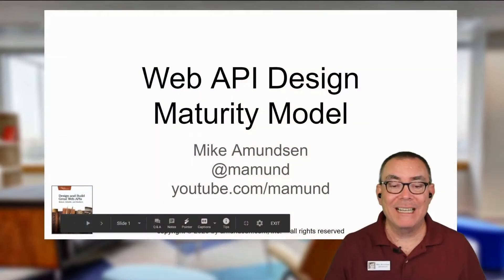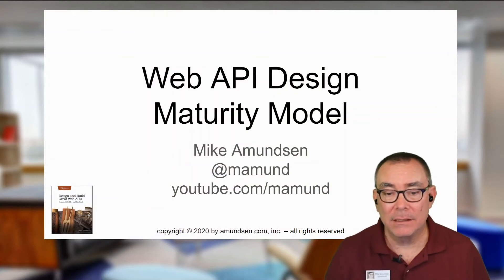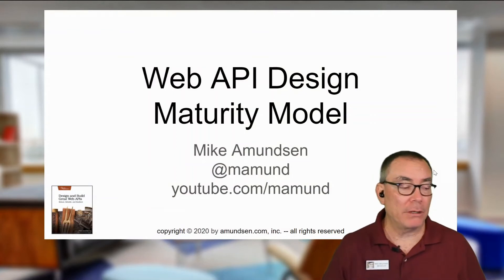Hi, Mike Amundsen here, and I want to talk to you more about APIs in depth. This is the series where we spend a little bit more time talking about some basic details of APIs and how you can use them. And in this episode, I want to talk about something in particular, and that is what's called the Web Design Maturity Model.